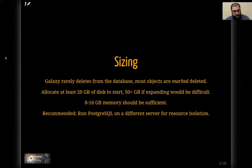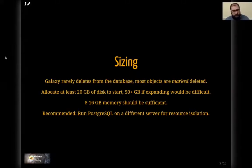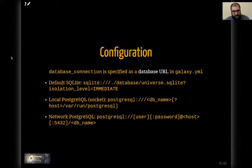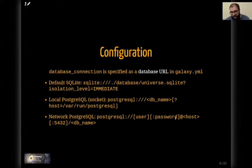In the galaxy.yaml file, there's configuration called database_connection. This is a URL-ish string passed to SQLAlchemy that determines what the database is. In the default option it's the universe.sqlite file under database. For PostgreSQL, you have a URL where you can specify a database name, the host, or a different directory where the socket lives if running a local PostgreSQL database. You can also specify the user and password, which is usually required when connecting to a remote PostgreSQL database.